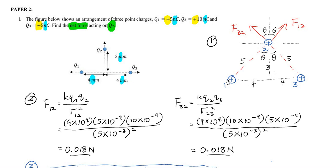Between Q1 and Q2, they have the same sign — positive and positive — so they repel. Q2 is being repelled by Q1, so the force F12 is going upward. Then Q2 and Q3 are also positive-positive, so they repel. F32 means Q2 is being repelled by Q3.